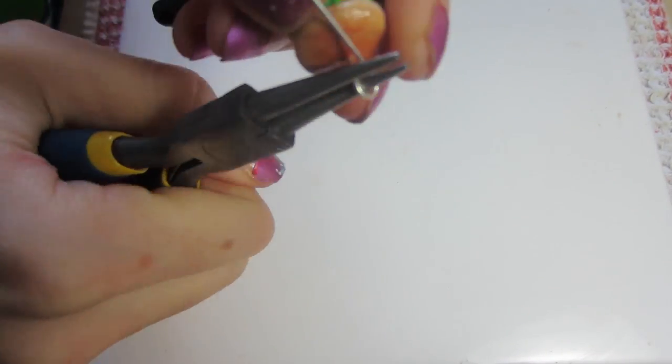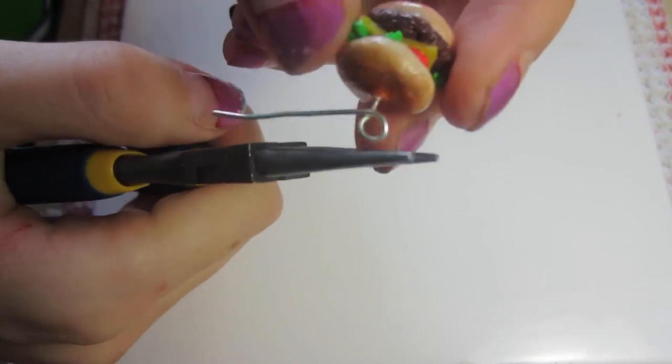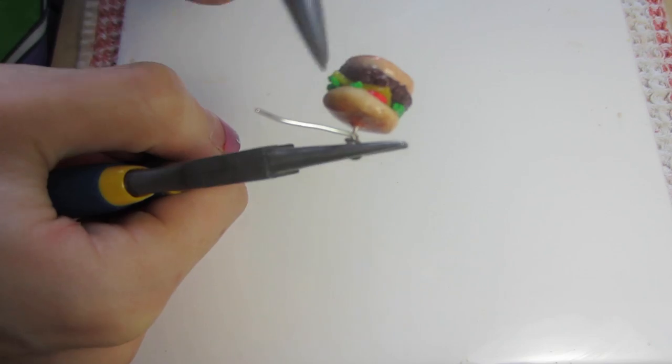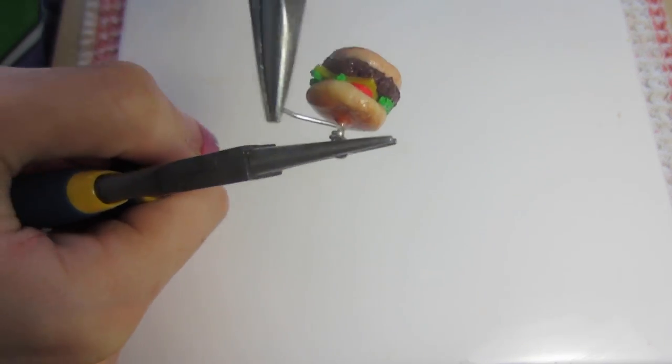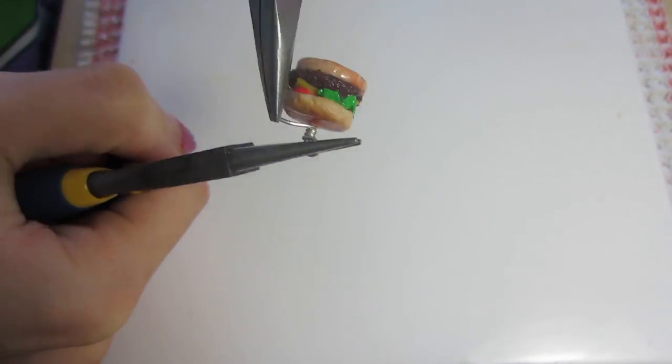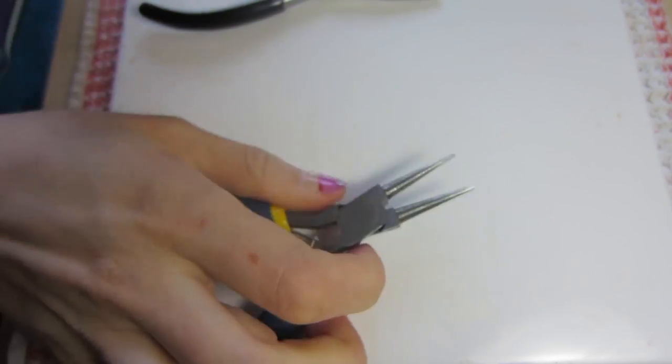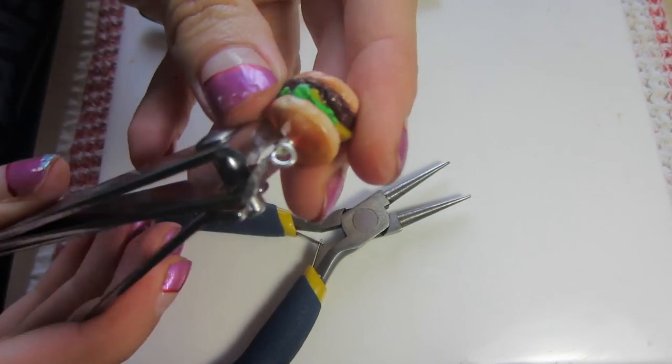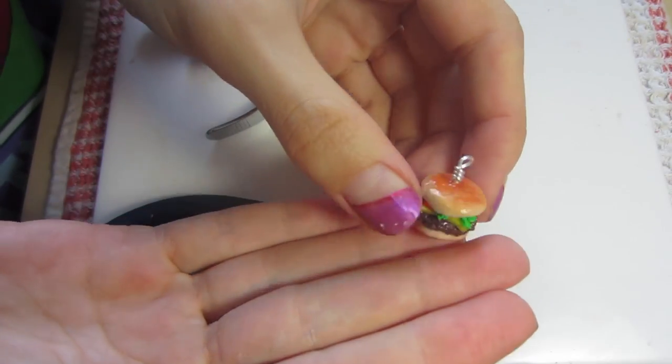So once that's dry it's time to make this into a findings. I'm going to make these into earrings so I'm just going to loop the finding around and then cut that off once you get it to the size you want and you're done.